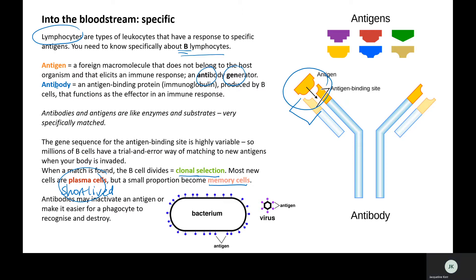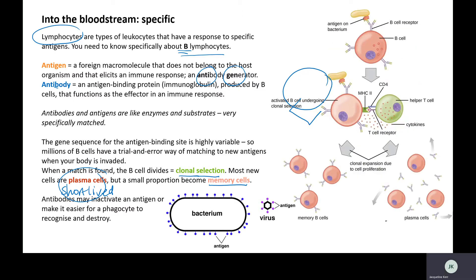Memory cells have the antibody expressed on their surface, so if they encounter the antigen they're triggered to divide again. Plasma cells produce antibodies that are sent out into the bloodstream and tissue fluid. B cell and T cell are synonymous with B lymphocyte and T lymphocyte respectively.